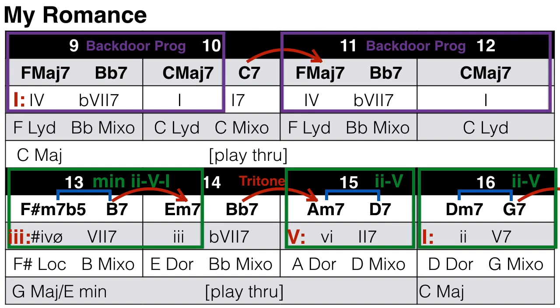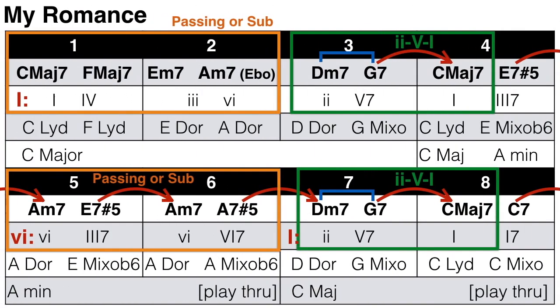Instead we could use the second level improvisation — playing the scales that relate only to the second level functionally important chords. For the first four bars, I would just play C major. For the end of bar 4 and bars 5 and 6, I would play some kind of A minor scale, emphasizing the G-sharp — like melodic or harmonic minor — over the E7 chords, and G natural (natural minor) over the A minor 7 chords. I would just keep playing the A minor scale over the A7 and play straight through it, because it only lasts half a bar, so it actually sounds fine.